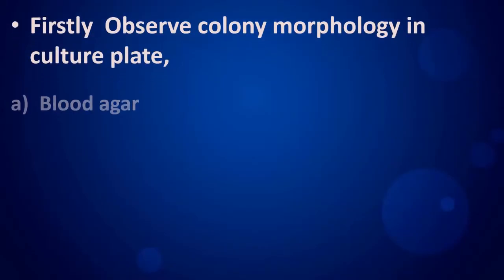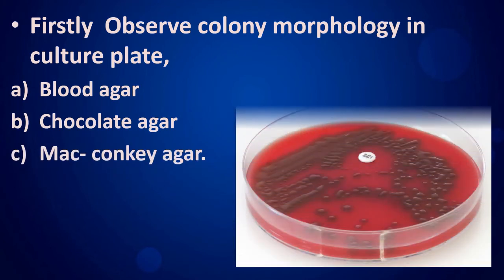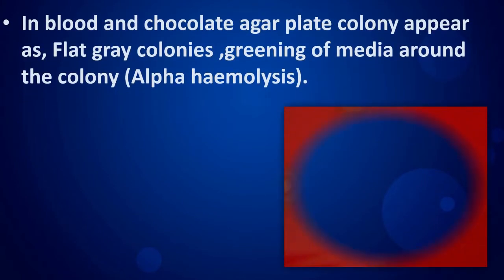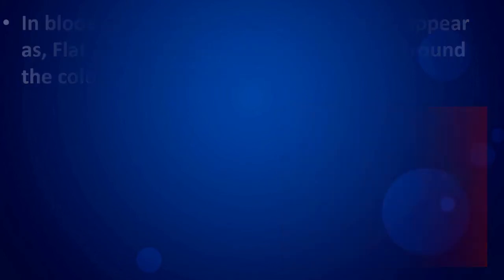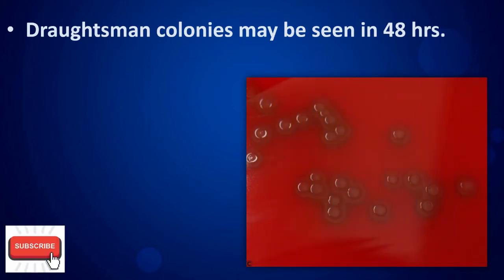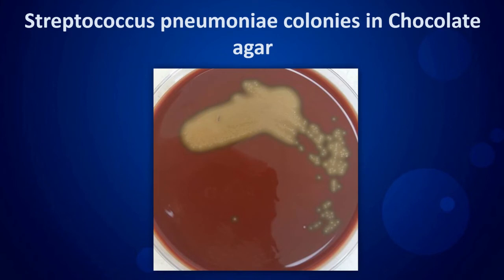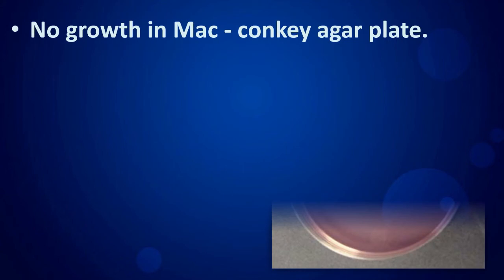First, observe colony morphology in culture plates: blood agar, chocolate agar, and MacConkey agar. In blood and chocolate agar plates, colonies appear as flat gray colonies with greening of the media around them. Draughtsman colonies may be seen in 48 hours. Streptococcus pneumoniae shows no growth on MacConkey agar.